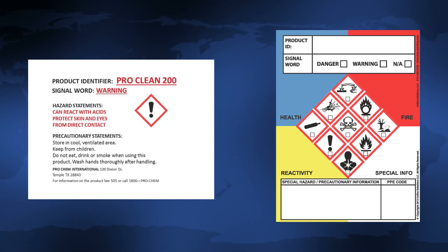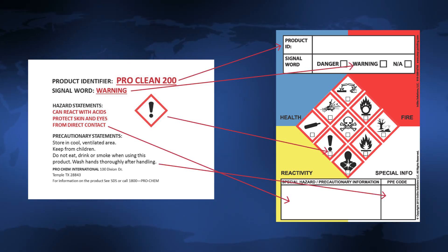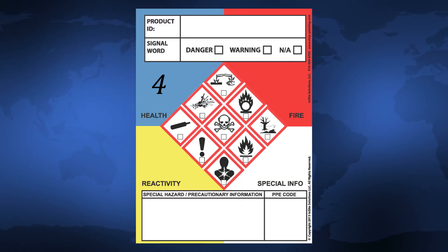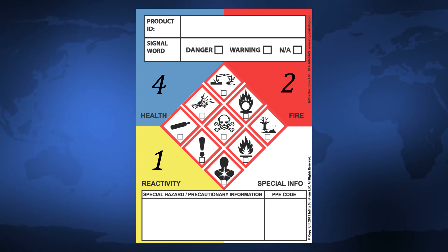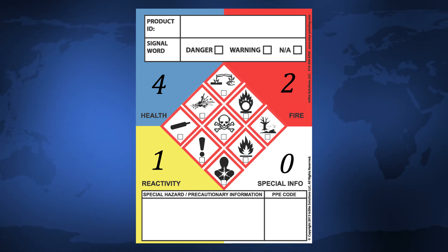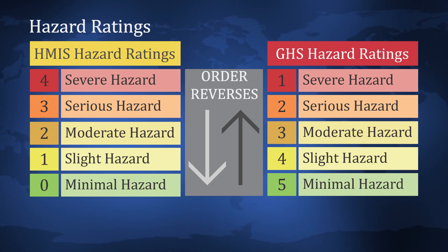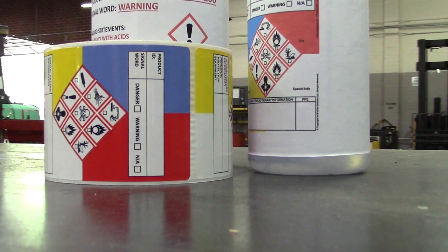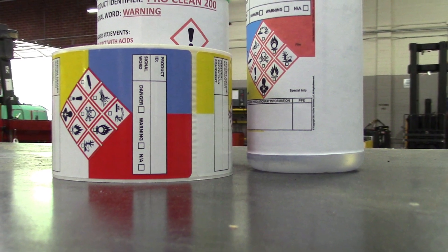This label is convenient and simple to use. GHS chemical hazard information can be taken directly from a GHS label or SDS. The colored hazard information fields on the label even allow employees the opportunity to utilize the HMIS system currently in use today. Another option is the GHS hazard class categories, which are in reversed order. Let's see how this new secondary label works.